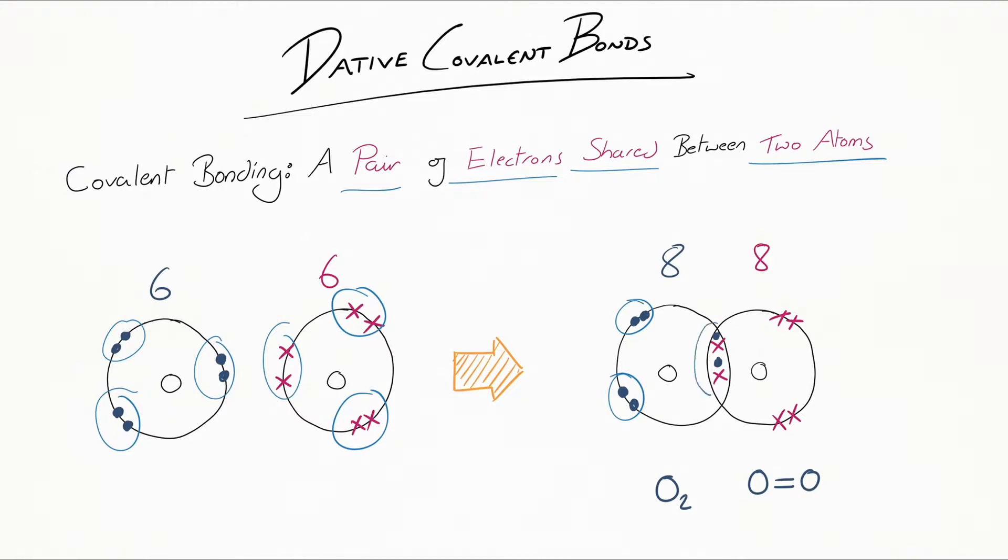For example, counting around the first oxygen: 1, 2, 3, 4, 5, 6, 7, 8, and the second oxygen: 1, 2, 3, 4, 5, 6, 7, 8. Because they're sharing two pairs of electrons, this means they have a double covalent bond. This molecule is O2, and the double covalent bond is denoted by two lines between each of the atoms here.